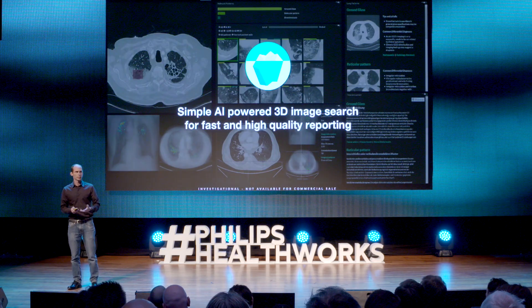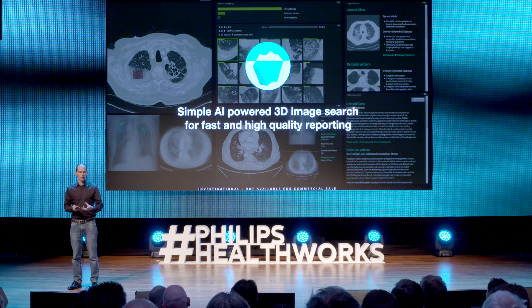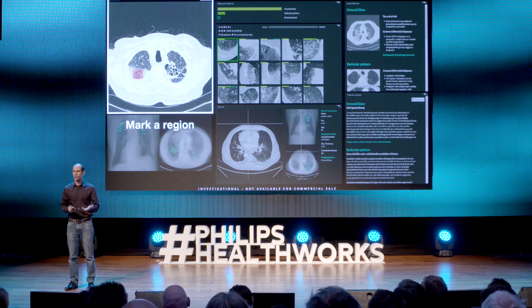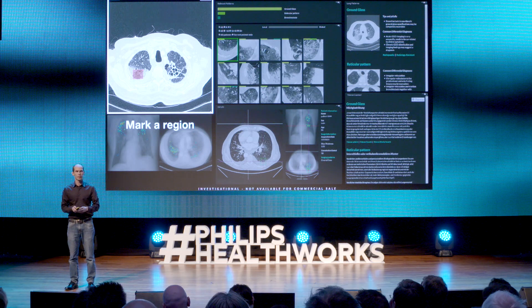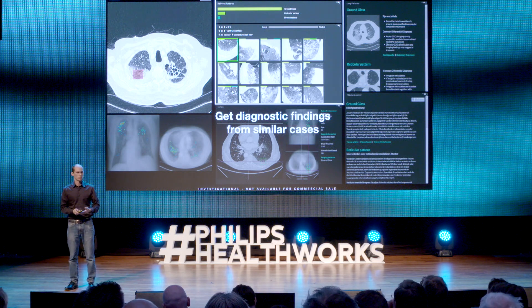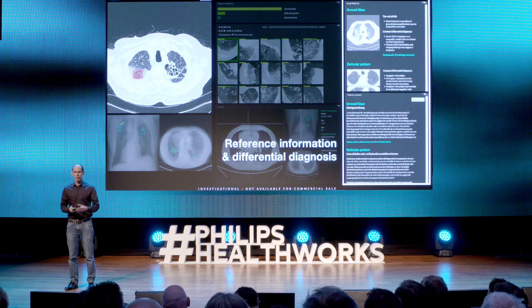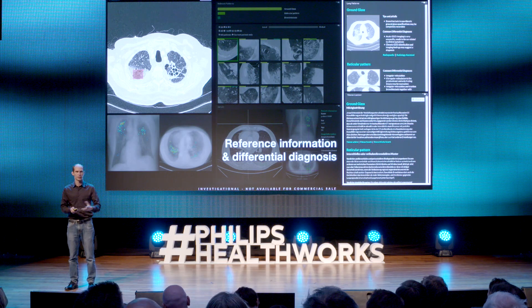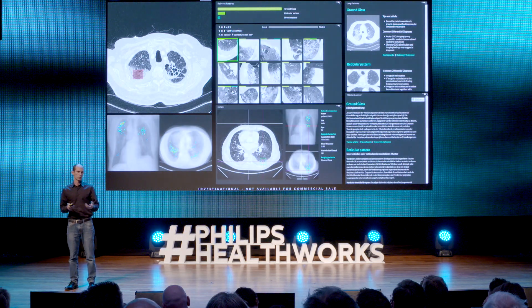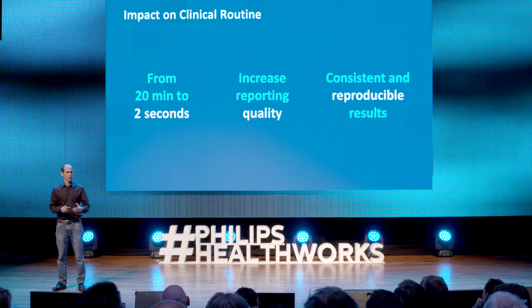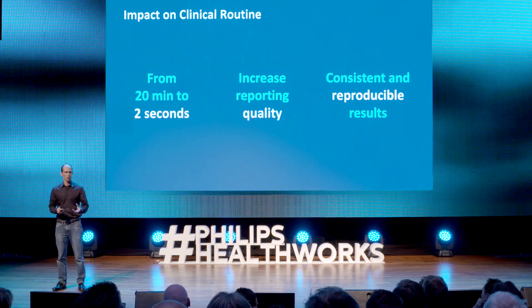We built a simple AI-powered 3D image search engine for fast and more accurate diagnosis. When you see a finding in an image, you simply mark the region of interest, and we immediately compare it to thousands of cases in the database. We bring back those diagnostic findings together with the evidence behind them, and we also show reference information and differential diagnoses — either publicly available or through commercial publishers — that match the image finding. All of that is web-based and within two seconds, turning a complex up-to-20-minute search process into two seconds, increasing reporting quality and making results reproducible and objective.